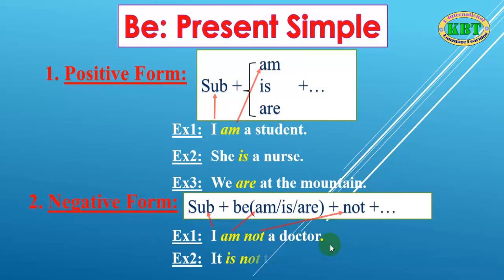Example number two: 'It is not hot today.' If the subject uses 'is', the verb to be is 'is' plus 'not'. Example number three: 'They are not friendly.' They is the subject, are is the verb to be, and we add 'not' to show the negative. So that's the negative form.